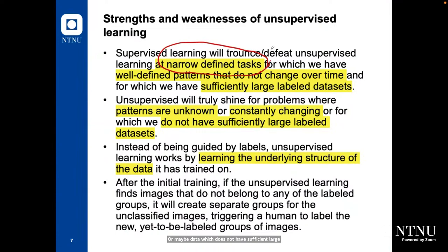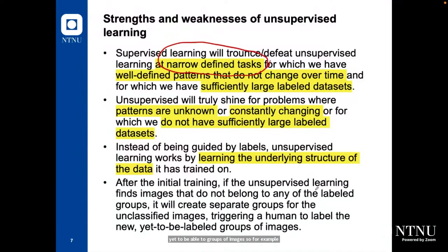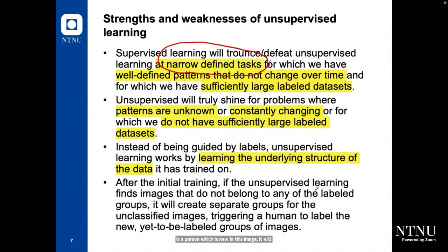Instead of being guided by labels, unsupervised learning works by learning the underlying structure of the data it has trained on. After the initial training, if the unsupervised learning system finds images that don't belong to any labeled group, it will create a separate group for that unclassified image and trigger a human to label the new group. For example, in a face recognition application like Facebook or Google, if there is a person which is new in the image, it will classify them as an unknown cluster, trigger you to give a new label, and then use that label for classifying the same person in new images later on.